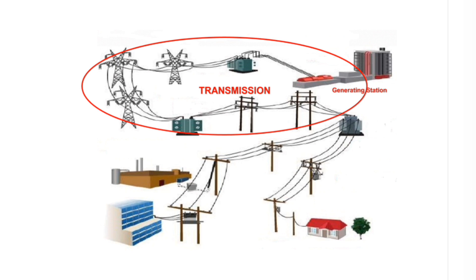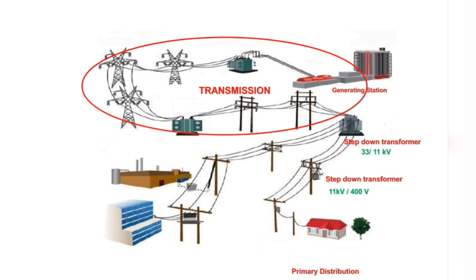The secondary transmission ends at a step-down transformer of rating 66/33 kV or 33/11 kV. From this step-down transformer, the power is transferred to a step-down transformer of rating 11 kV/400 V, located at the point where the users are. The transfer of power from the 33/11 kV transformer to the 11 kV/400 V transformer constitutes the primary distribution.